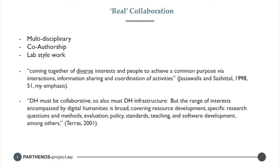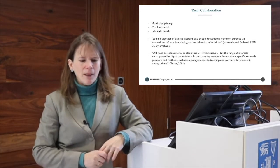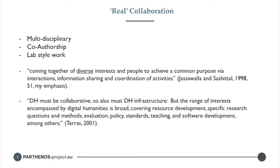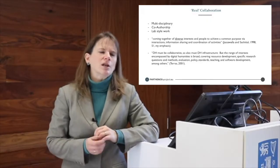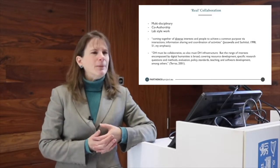For many people who work on collaboration there's this idea of 'real' collaboration, which would be multidisciplinary and manifested largely in things like co-authorship and lab-style work — the idea that collaboration occurs when you sit together and publish together. But if we look at classical definitions of collaboration, this is not necessarily part of the definition that needs to be defended. Jaswal and Sashtal call it 'the coming together of diverse interests and people to achieve a common purpose via interactions, information sharing, and coordination of activities.' I like this because I think diversity is important to collaboration and is of course one of the sources of tension in it.